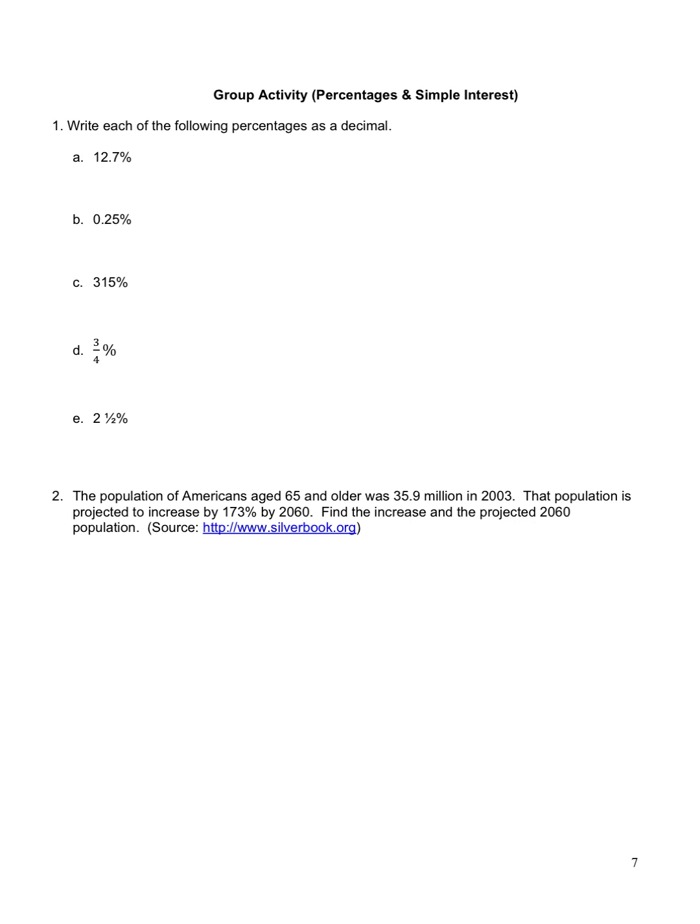To change a percent to a decimal, you divide by 100 or move the decimal two places to the left. So 12.7% is 0.127, 0.25% is 0.0025, 315% is 3.15. Three quarters of a percent, that's 0.75%, so I changed the fraction to a decimal without changing the percent to a decimal. Now move the decimal two places to the left, so I have 0.0075.